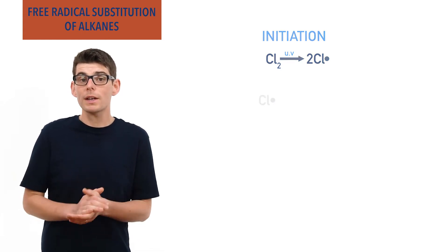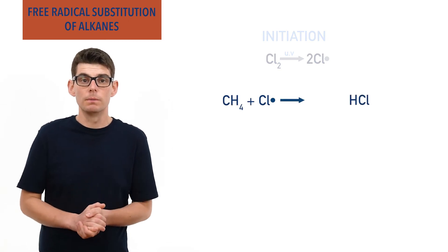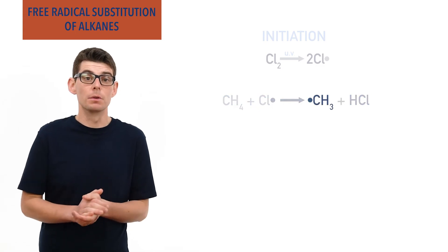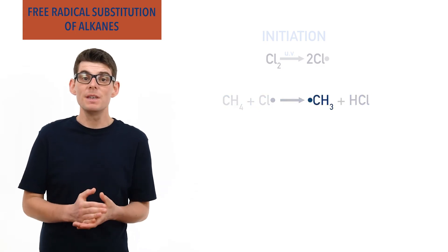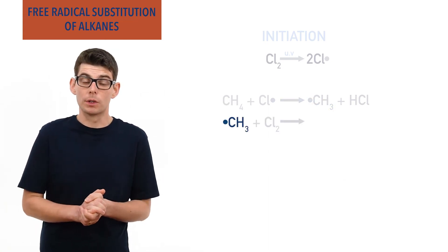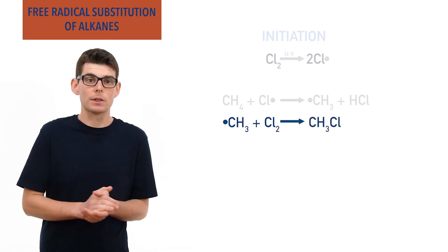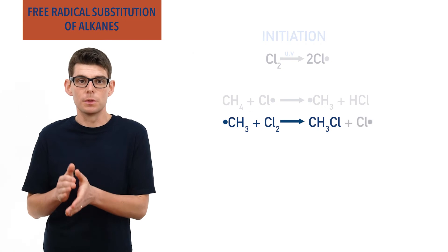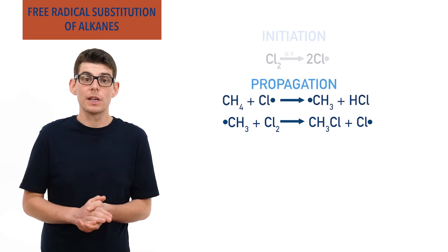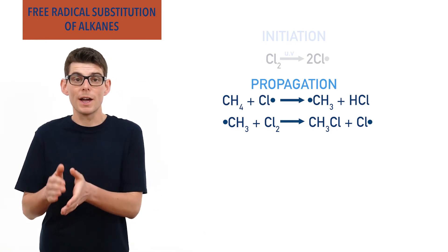A chlorine radical can now react with methane and will form hydrogen chloride, a non-radical. This will leave an unpaired electron on a CH3 group, making what is called a methyl radical. The methyl radical can then react with chlorine molecules, Cl2, to form chloromethane, a non-radical, and a chlorine radical is produced as well. These are both propagation reactions — a radical species and a non-radical species have reacted to form a new radical.